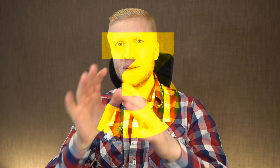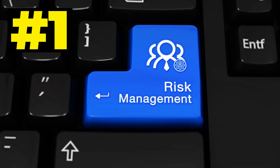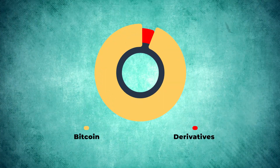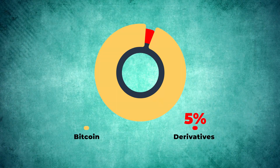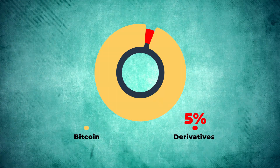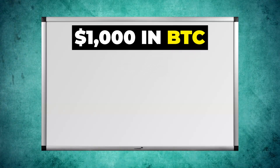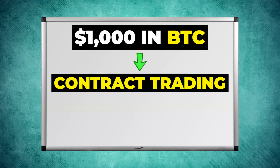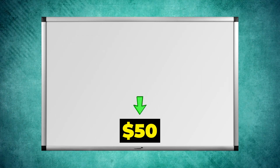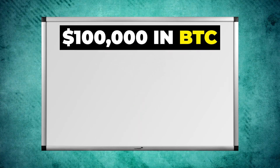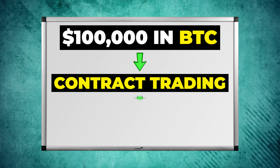Now I want to give you three tips that are especially important for beginners. The first one is risk management. Many beginners start immediately with contract trading and then lose all of their trading money. My recommendation is that you use a maximum of 5% of your portfolio for futures trading and hold the rest directly in Bitcoin. For example, if you have $1,000 in Bitcoin, do contract trading with a maximum of $50. If you have $100,000 in Bitcoin, do contract trading with a maximum of $5,000.